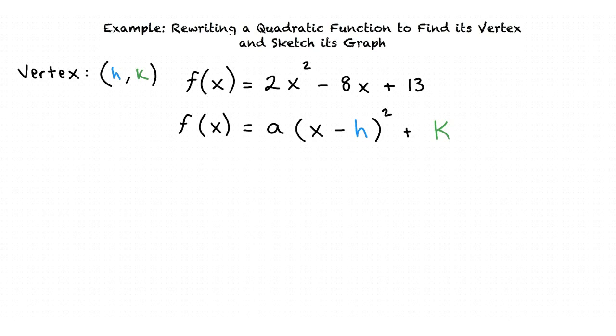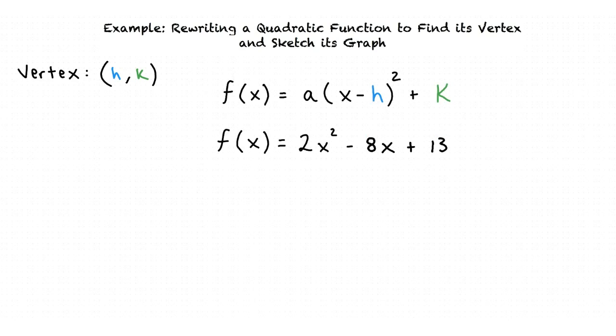In order to rewrite f(x), we must begin by completing the square. We can start by factoring out a 2 from our first two terms. The result is f(x) = 2(x² - 4x) + 13.